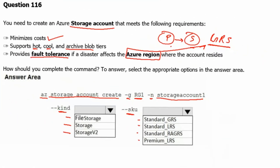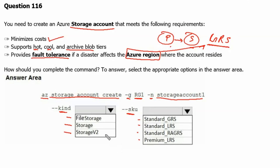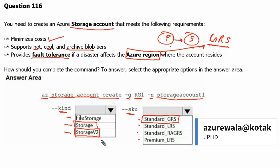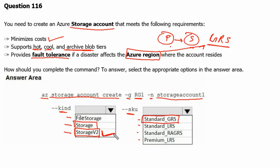Going back to the question, from Microsoft documentation we understand that StorageV2 and Storage V1 — which is general purpose storage accounts — can support standard GRS redundancy. However, from the Azure calculator we understand that hot, cool, and archive block tiers are supported by StorageV2 accounts and not by Storage V1 accounts. Therefore, for 'kind' we will select StorageV2, and for 'SKU' we will select Standard GRS.